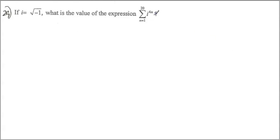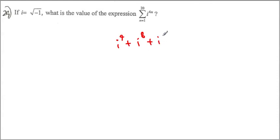When n equals 1, we get i to the 4th power; when n equals 2, we get i to the 8th power; then i to the 12th power. Whenever the exponent is a multiple of 4, these are all equal to 1. So each time when n is plugged in, we get 1. Therefore we have 20 of those, and our answer becomes 20.